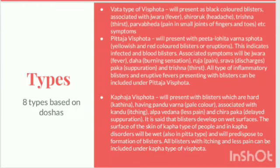In Vata type of Vispota, there will be blackish discoloration of the blisters. They are associated with ajwara, shiro ruk, trishna, and parvabeda.